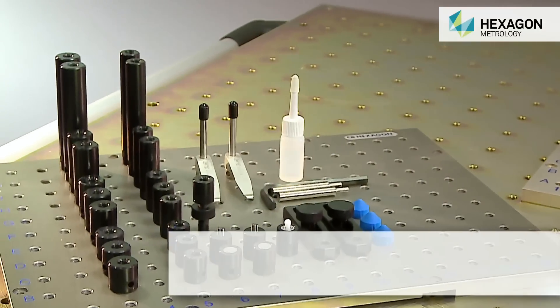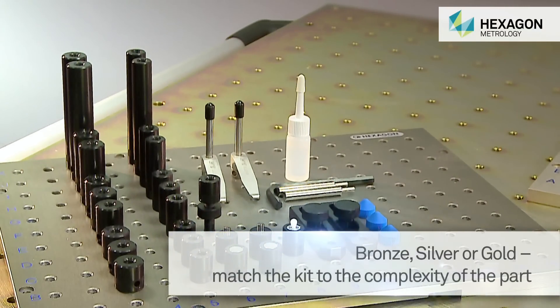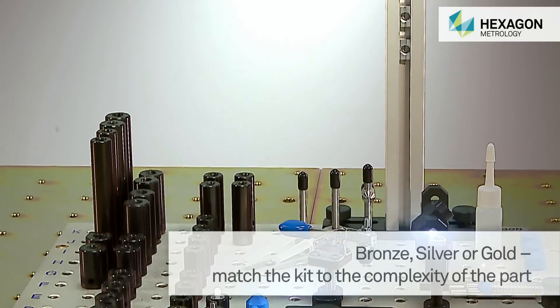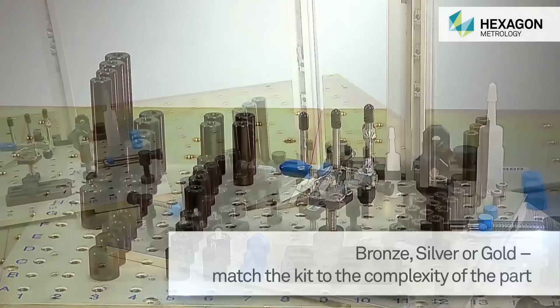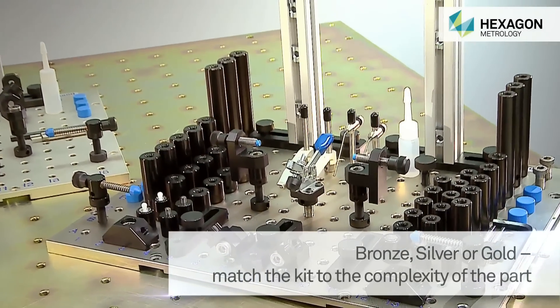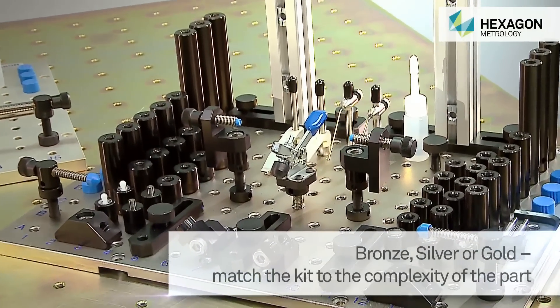The bronze kit includes 46 elements for the assembly of basic fixtures. The silver kit has 66 elements and the gold kit contains 93, ideal for larger or more complex workpieces.